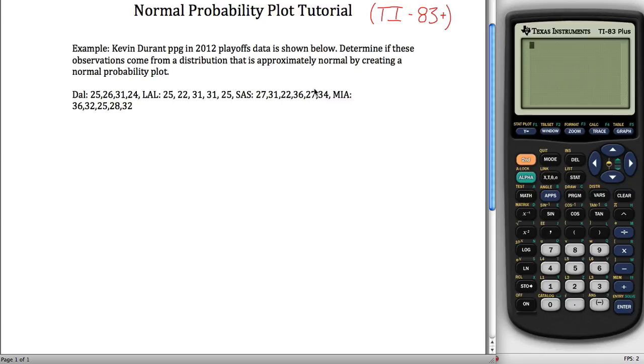What I can do is create a normal probability plot using all of this data and then take a look at it. Based on how it looks, I can draw a conclusion of whether it looks like it came from a distribution that's approximately normal, or no, it looks like it did not.